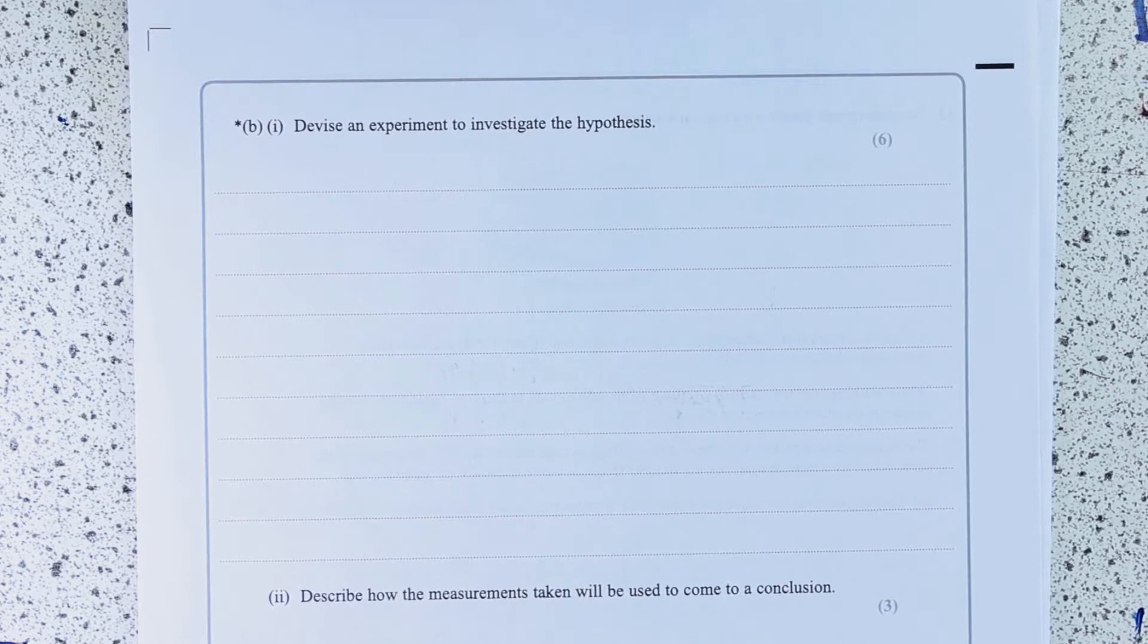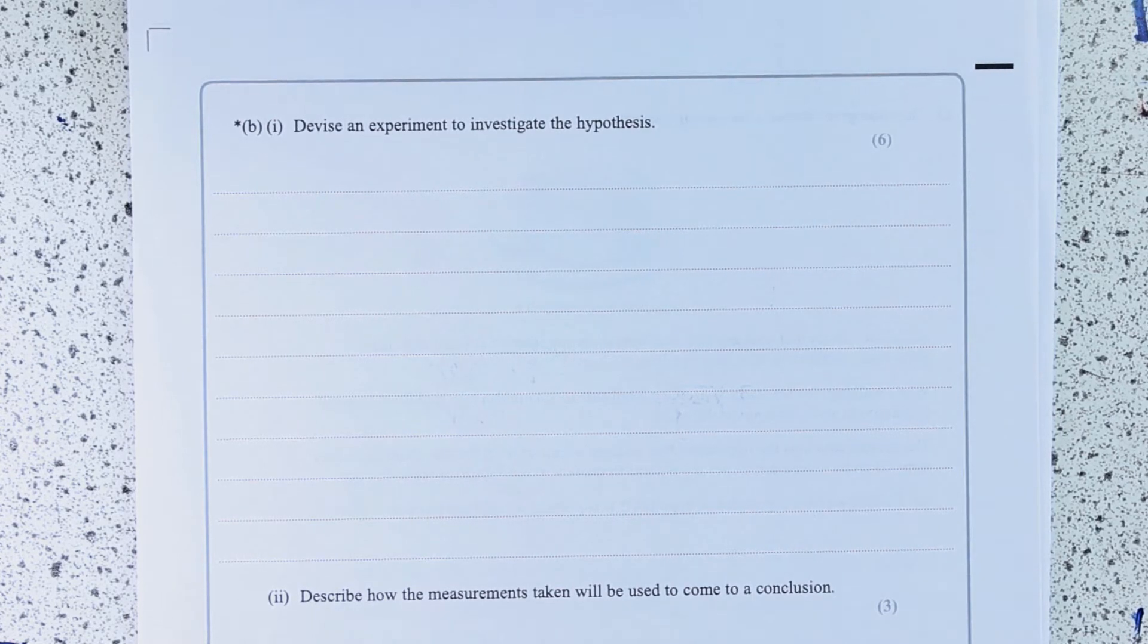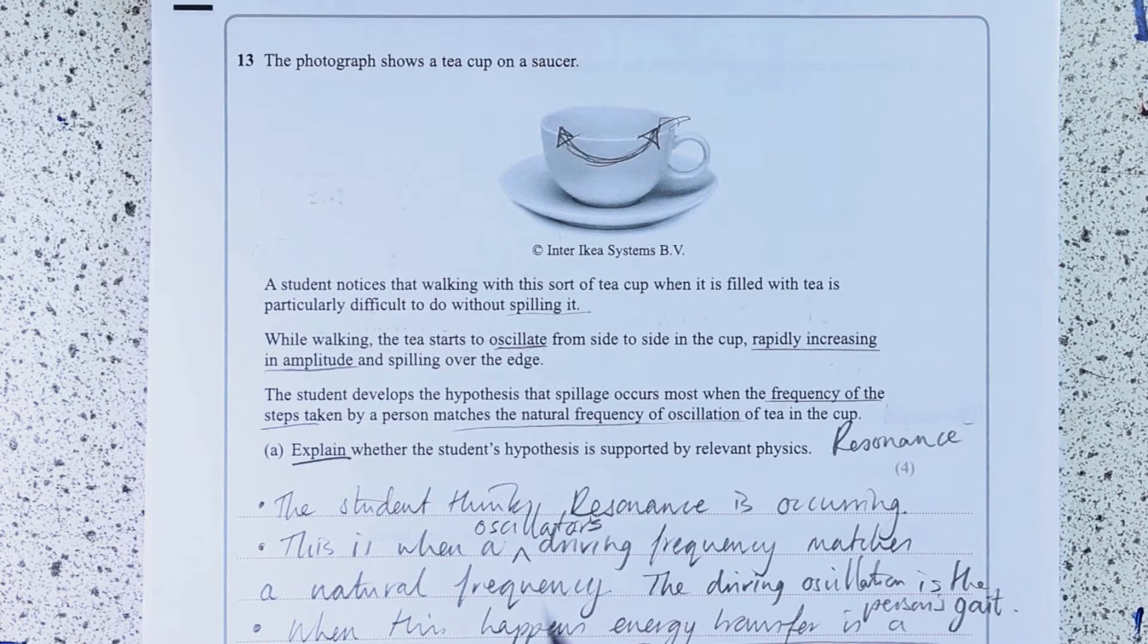How many steps per second do they take or how far do they move side to side when they're walking? Devise an experiment to investigate the hypothesis. There's a little asterisk. So before we do anything with a little asterisk, we're going to have a little plan.